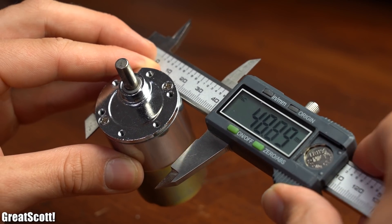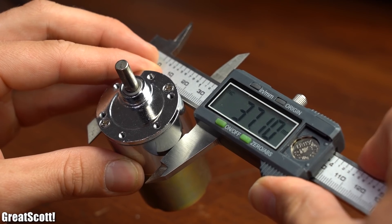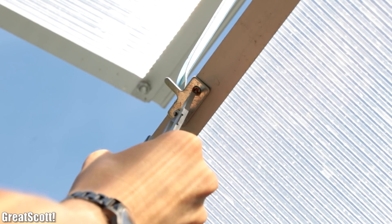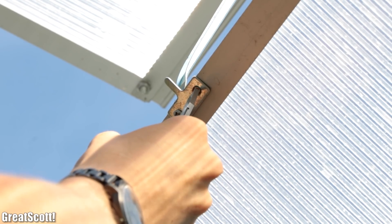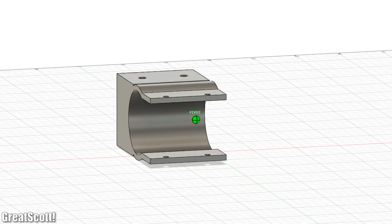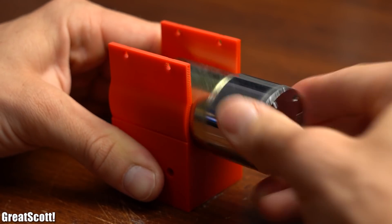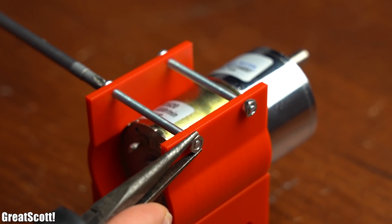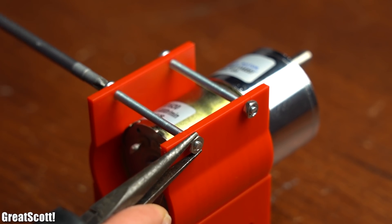So next I measured all the dimensions of the motor as well as the space between the available mounting holes next to the window and through this knowledge created this motor holder in which the motor will later fit snugly and can be locked in place with two M3 bolts and nuts.